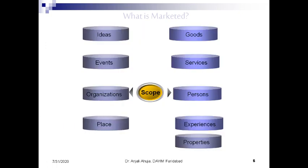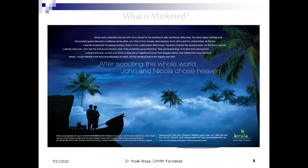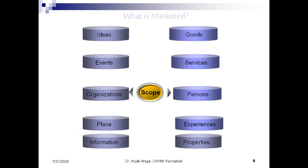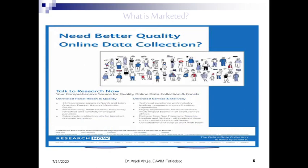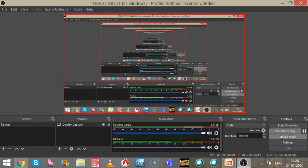The marketing of place is done by tourism companies or when the government promotes tourism — for example, an ad by Kerala Tourism promoting Kerala as a destination. Finally, information is also sold through data and research organizations that charge for it. These are the various kinds of activities included in the scope of marketing. In the next class we will discuss various core concepts of marketing. Have a nice day.